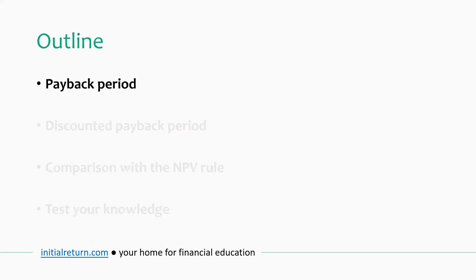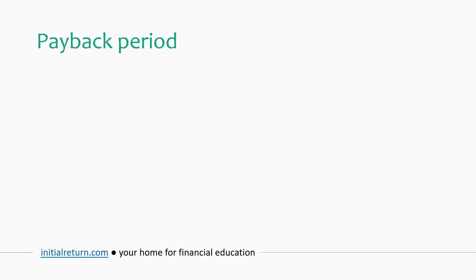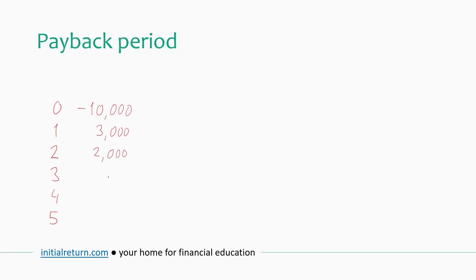Let's get started with explaining what the payback period is. To illustrate that, let's use a simple example. So let's say we have an investment project which generates annual cash flows over five years. This project costs $10,000 to invest today, and it will start generating cash flows starting from next year: $3,000 in the first year, $2,000 in year two, and $4,000 in the remaining three years.